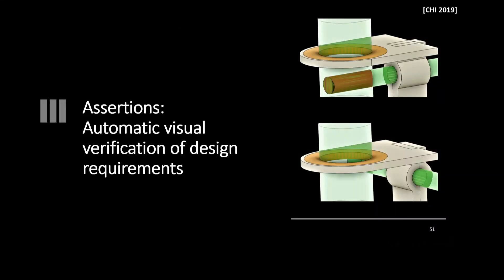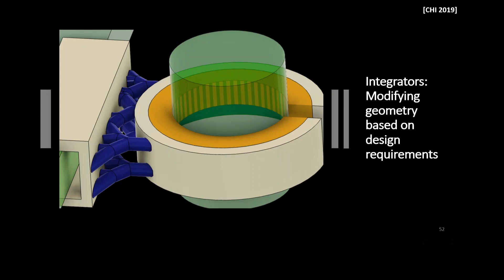Functional geometry encapsulates geometry by its real-world purpose, associates geometry with automatic tests, and relates geometry to ways of modifying it. For example, we can create 3D models with assertions — automatic visual verification of design requirements. If we're making a cup holder mounting onto a bike handlebar, an assertion ensures the handlebar and cup can't occupy the same spot, highlighted in red when geometry interferes. We can also create integrators — that blue vine-like structure — which modify geometry based on specific design requirements, growing between the cup and handlebar to connect them into one solid piece.